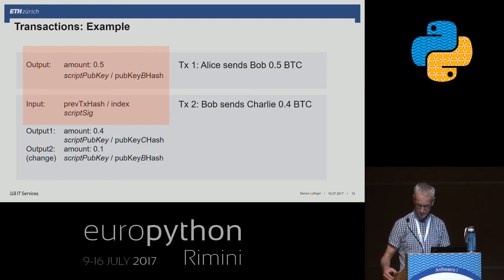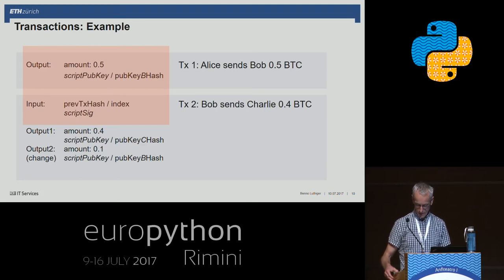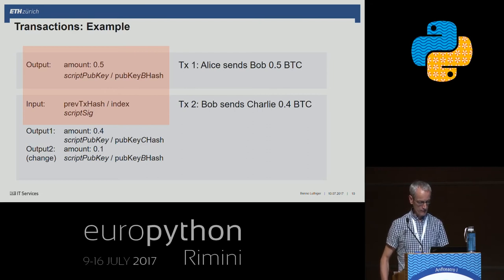Of course, this transaction also has an output which includes Charlie's public key in hashed form. The red area on this slide combines the output of the previous transaction and the input of the current transaction.